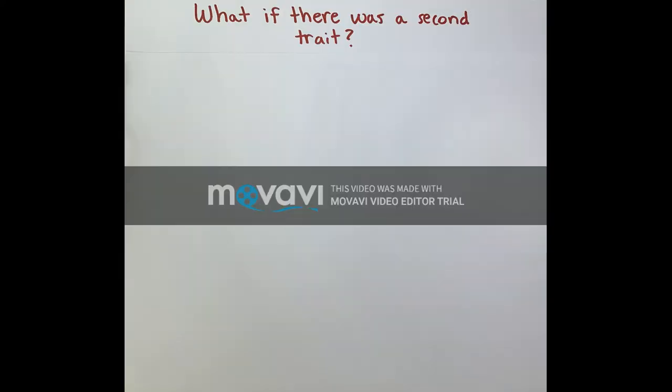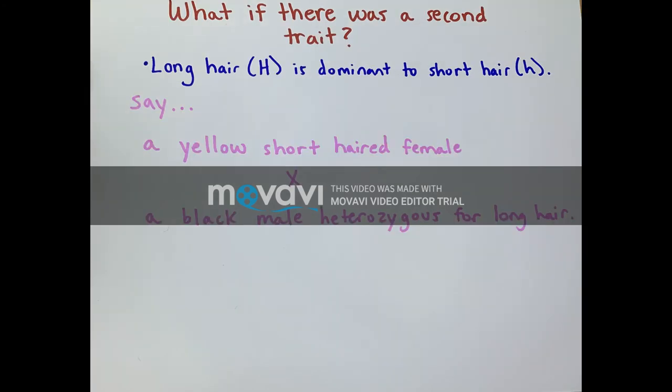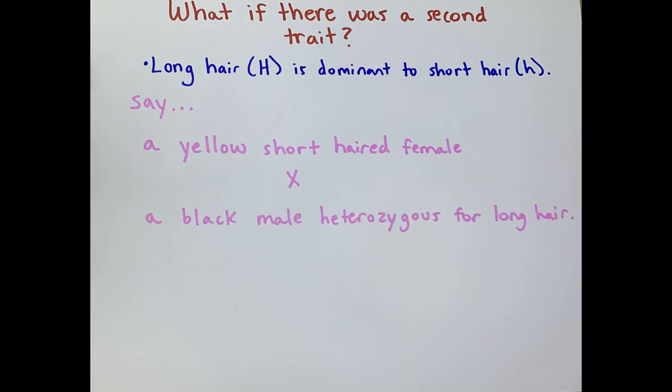What if there was a second trait? Long hair, capital H, is dominant to short hair, lowercase h. Say a yellow short-haired female crosses with a black male heterozygous for long hair. The female is homozygous recessive and the male, as stated, is heterozygous.